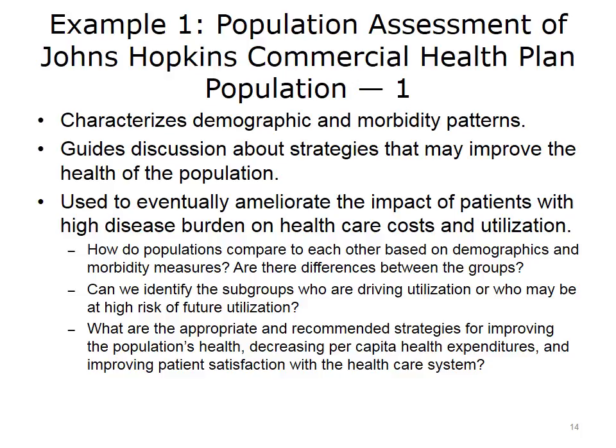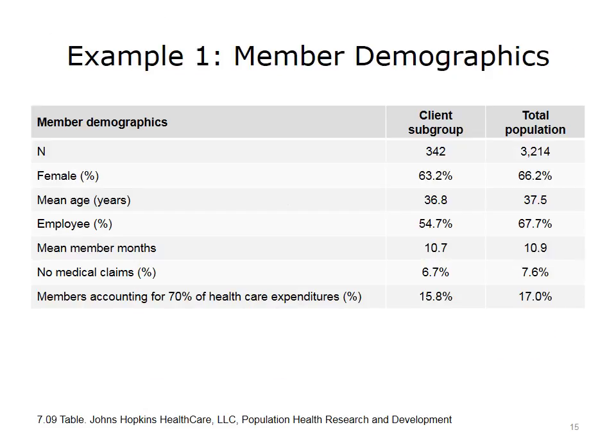The assessment was used to ameliorate the impact of patients with high disease burden on health care costs and utilization. Understanding patterns of morbidity helped them think about disease burden and how to positively influence health care costs, utilization, and patient outcomes. Their questions included: How do populations compare based on demographics and morbidity measures? Are there differences between groups within this commercial health plan? Is it possible to identify subgroups driving utilization or at high risk for future utilization? And what are the appropriate recommendations for improving the population's health, decreasing expenditures, and improving patient experience and satisfaction?